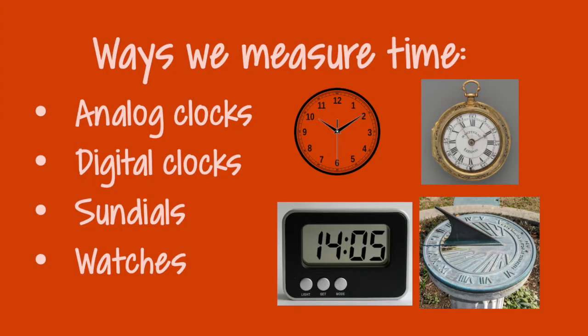So what are some of the ways that we measure time? Initially, people used to use sundials to track the sun and its movements to tell the time throughout the day. Now, more frequently, we use analog or digital clocks. These can be in the form of watches. You might see digital clocks on an oven or microwave or on a phone. You might see an analog clock up on the wall somewhere. So lots of different types of ways that we can tell time.